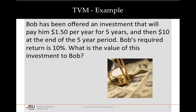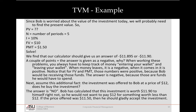For a simple example: Bob has been offered an investment that pays him $1.50 per year for five years, and then at the end of that five years he gets $10. If he requires 10% on his investments, what is the value of this investment for Bob? In other words, what's the most that Bob would pay today to receive $1.50 per year for five years and then $10 at the end of that five-year period? Plugging it into our financial calculator: the number of periods is five, the interest rate is 10%, and the future value lump sum is $10.